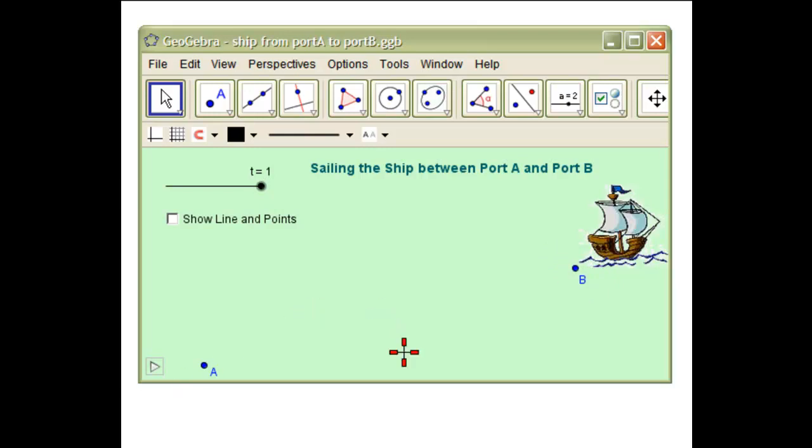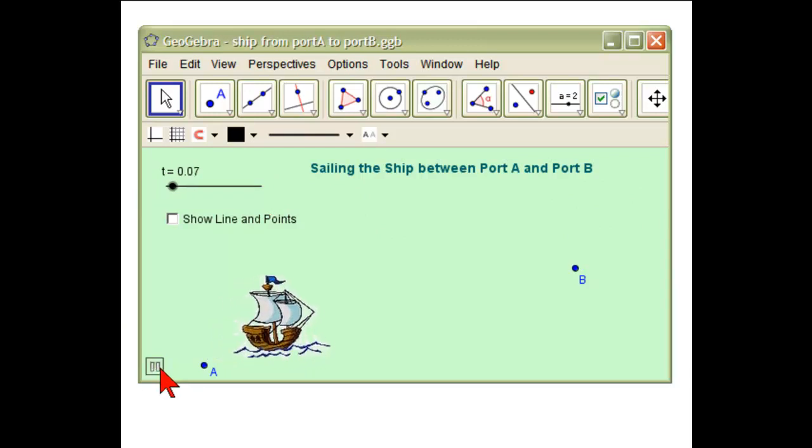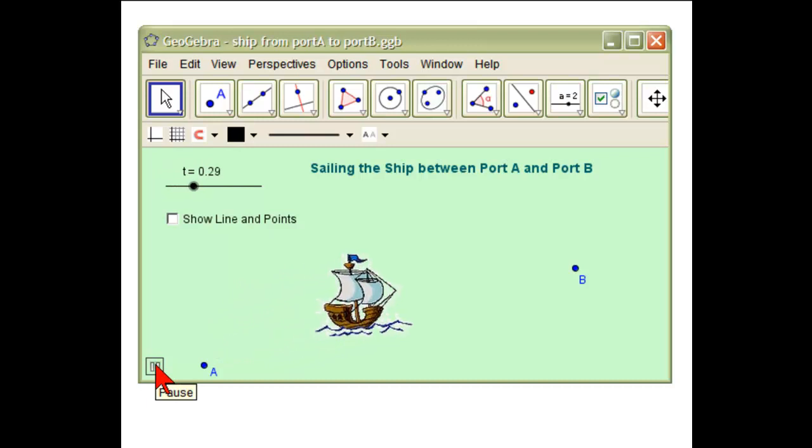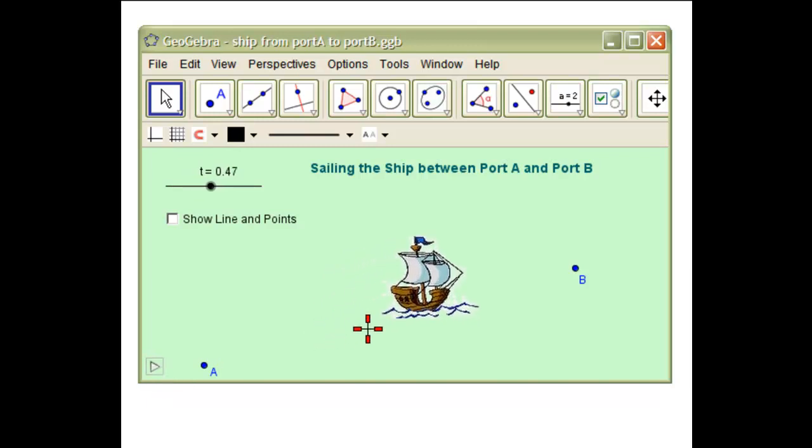And we saw that the ship was sailing at a constant speed from port A to port B. How about when T equals one-half, point five? We can see that the bottom left-hand corner is halfway between A and B, so it's at the midpoint.